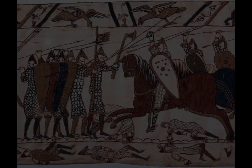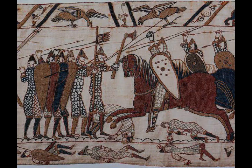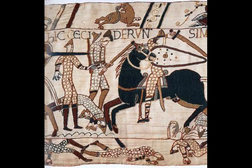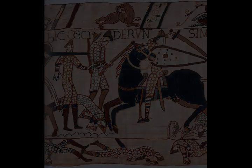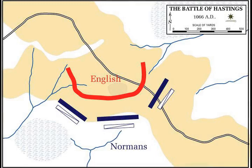This led to the establishment of a powerful Norman interest in English politics, as Edward drew heavily on his former hosts for support, bringing in Norman courtiers, soldiers, and clerics and appointing them to positions of power, particularly in the church. Edward was childless and embroiled in conflict with the formidable Godwin, Earl of Wessex, and his sons, and he may also have encouraged Duke William of Normandy's ambitions for the English throne.